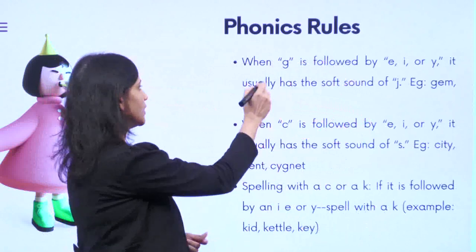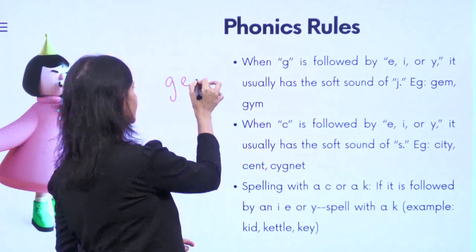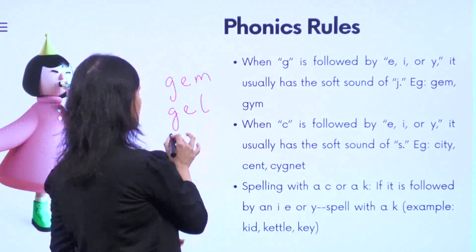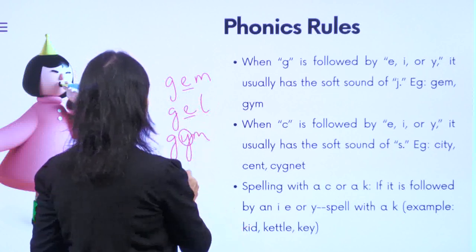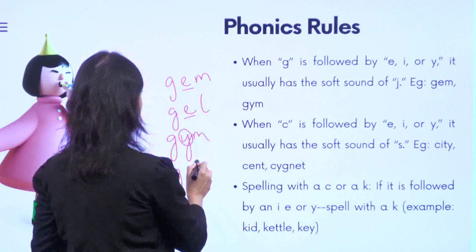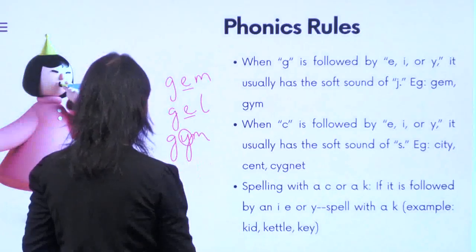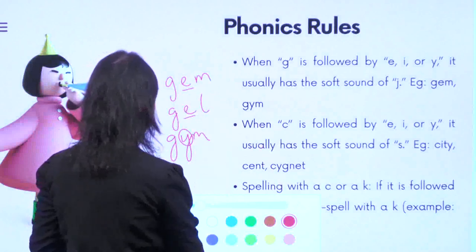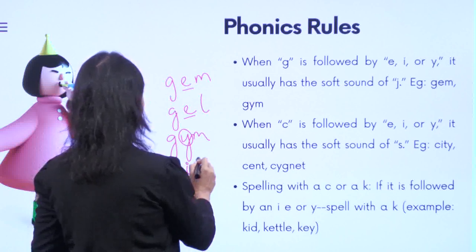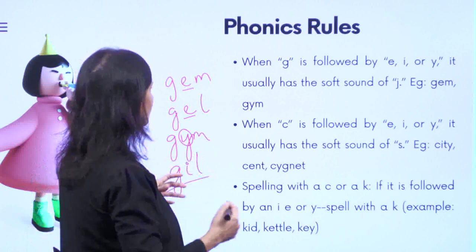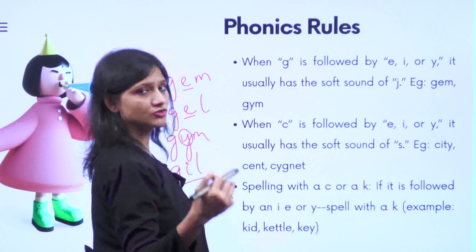Rule five: when G is followed by E, I, or Y, it usually has the soft sound of G — like in 'gem', 'gel'. So when G is followed by E, I, or Y, the soft sound of G is produced. We have seen many other words like this before.